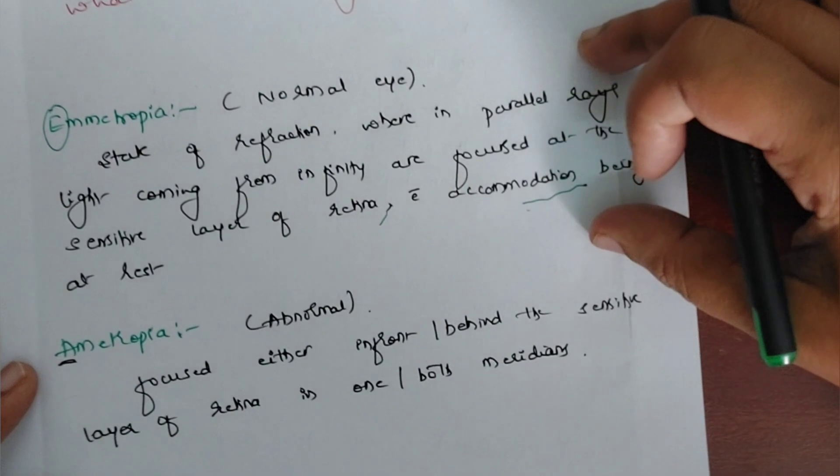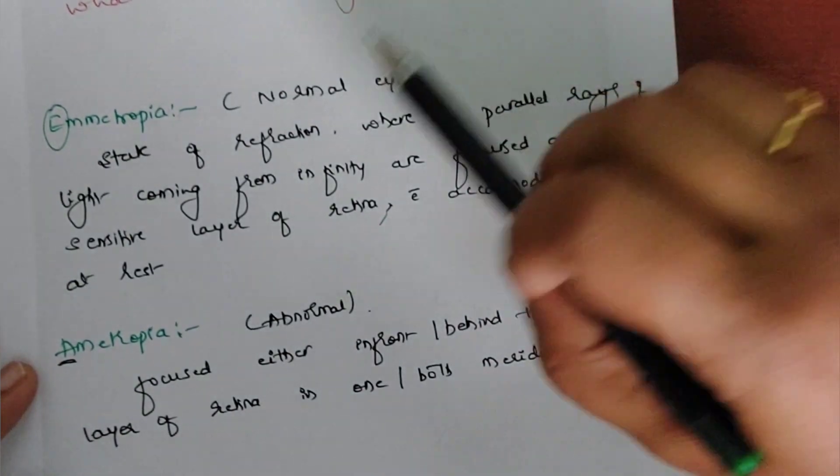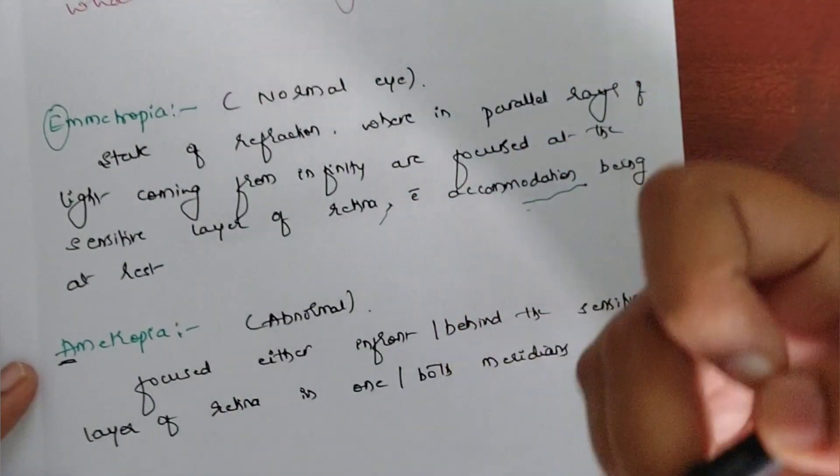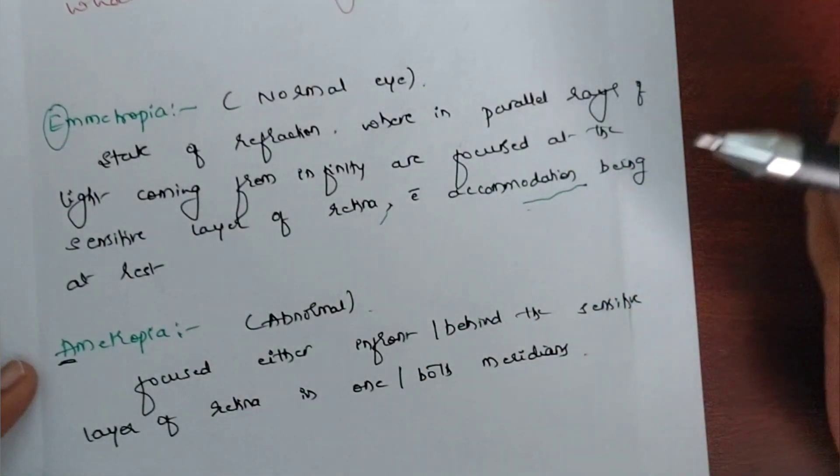This whole sentence you should always remember to explain both emmetropia, ametropia, and also the definition of myopia, hypermetropia, and astigmatism.